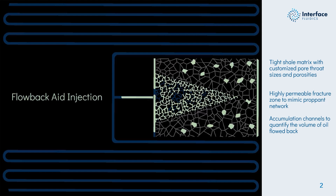The other thing to consider when looking at this channel is that this microfluidic device is actually under a microscope illuminated by UV light, which enables the oil to fluoresce. That means that in this video the oil phase is a bright color and the aqueous phase is a dark color — dark blue.